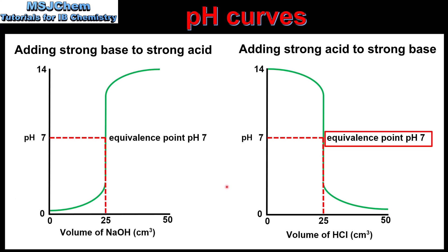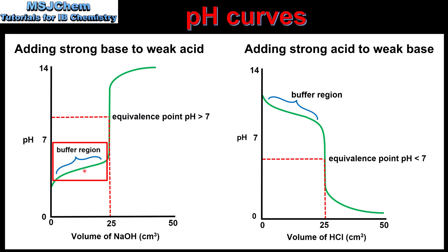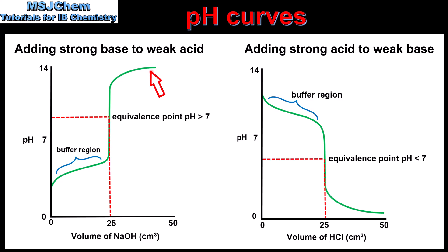Next we look at pH curves involving weak acids and bases. On the left we have the pH curve for adding a strong base to a weak acid. We start at a pH of approximately 3, which is the pH of a weak acid. As the base is added the pH increases and we reach the buffer region, where the solution contains appreciable amounts of the weak acid and its conjugate base. The solution acts as a buffer, resisting changes in pH, until we reach the point of inflection and then a steep increase to pH 14.